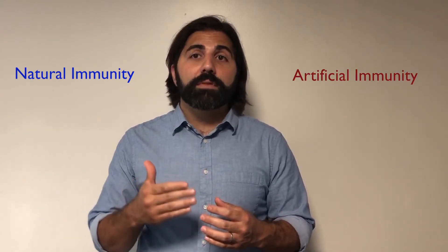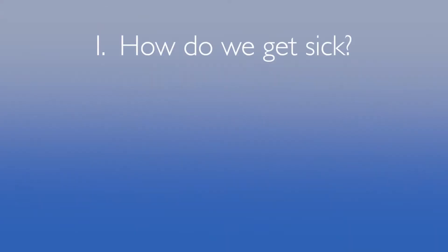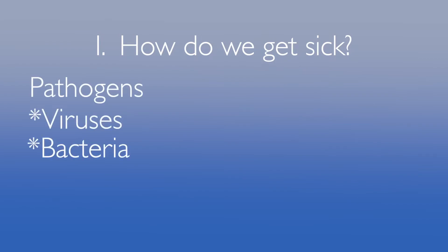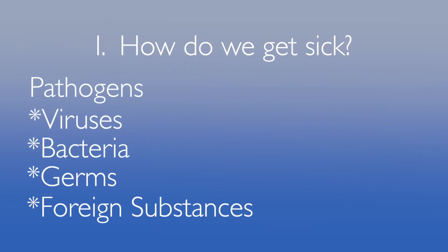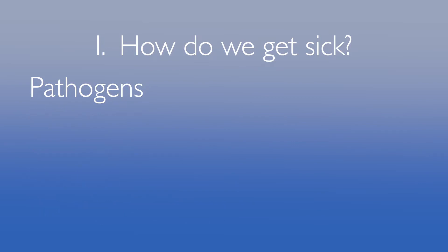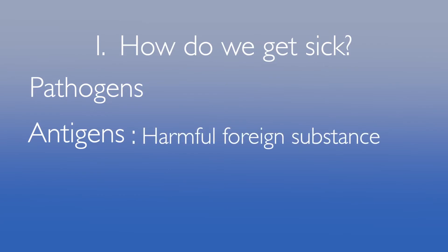There are two ways we obtain immunity: either through natural immunity or artificial immunity. Today, we'll talk about the differences between them. Let's talk about how an infection gets us sick in the first place. Enter the pathogen — these are viruses, bacteria, germs, and any other foreign substance that can make you sick. We are often naturally exposed to them through breathing them in or ingesting them. A pathogen contains a unique marker called an antigen. The body recognizes antigens as a foreign substance that can harm the body. If these antigens get into a cell, they create an intracellular infection.